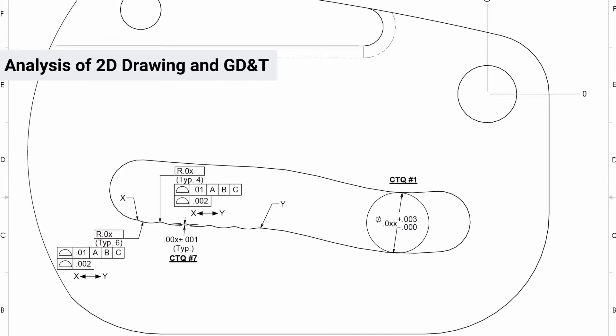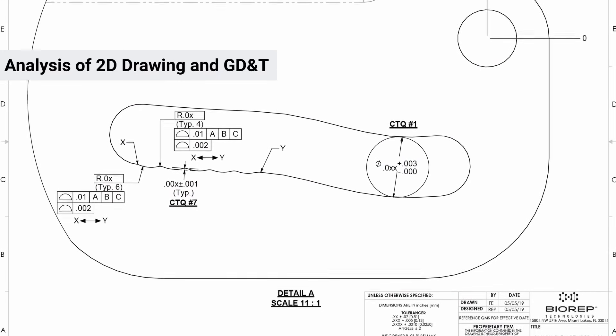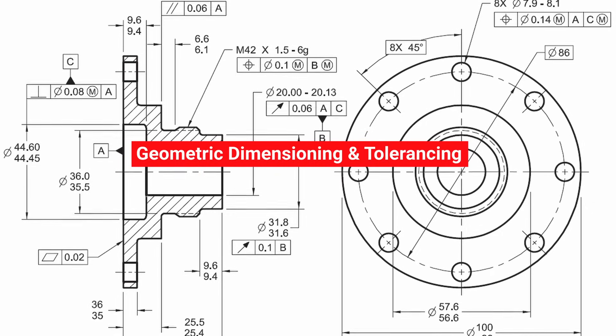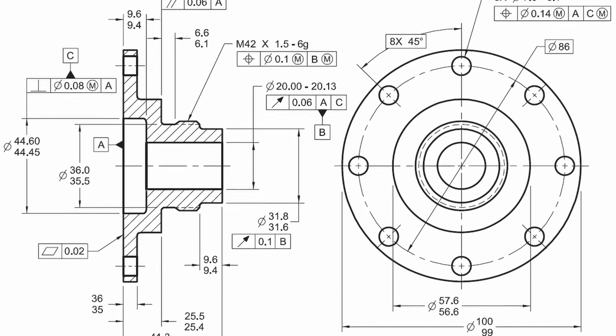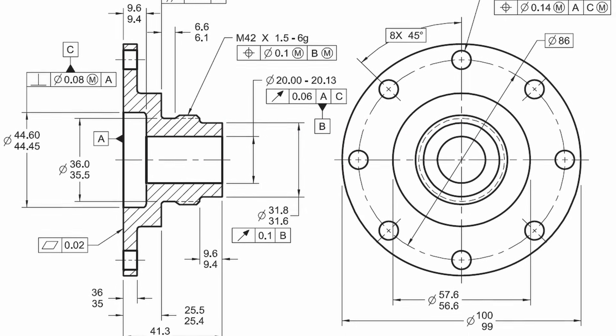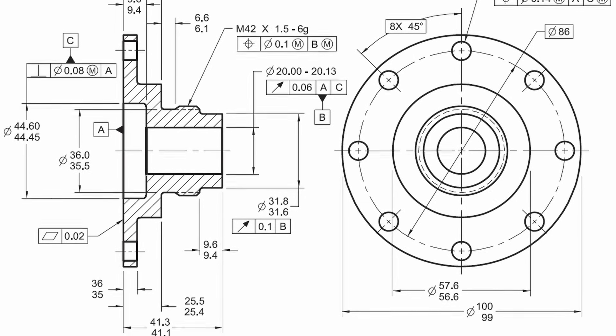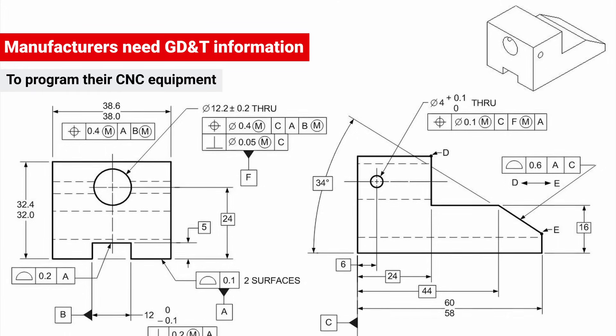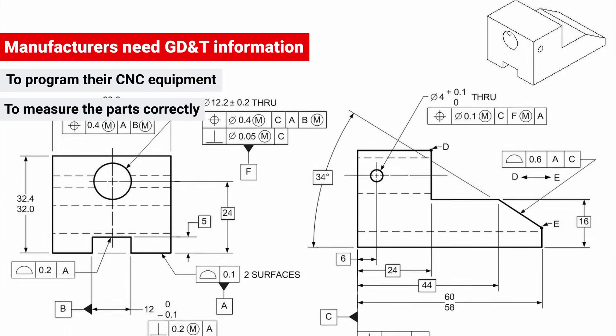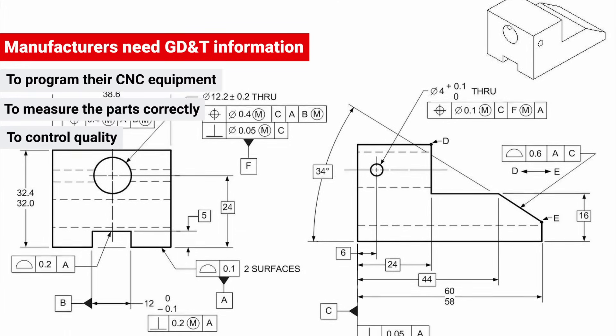We use 2D drawings to understand the GD&T information, that is, geometric dimensioning and tolerancing, or the system of numbers and symbols that specify all the features of a part. Manufacturers need this information not only to program their CNC equipment, but also to measure the parts correctly and to control quality.